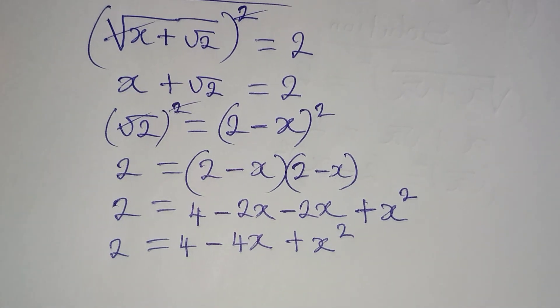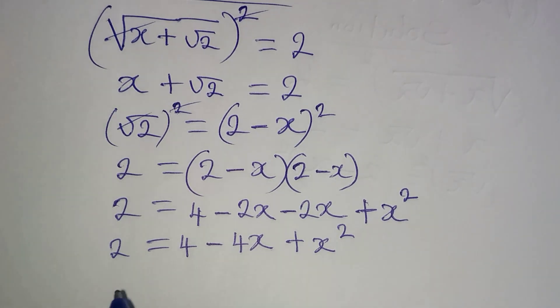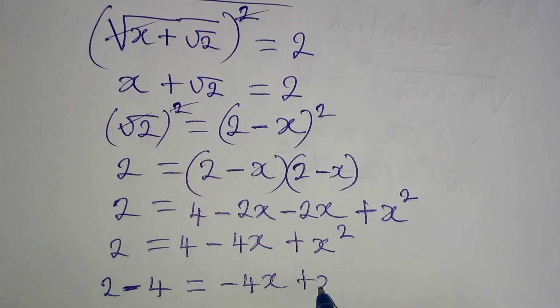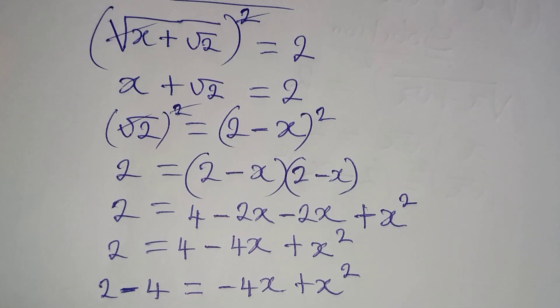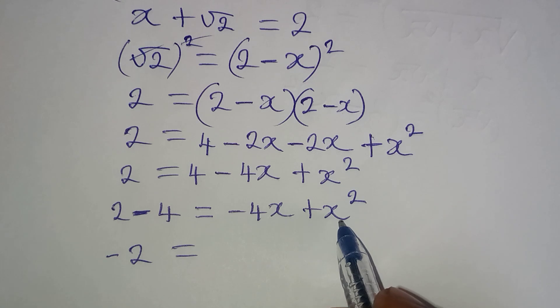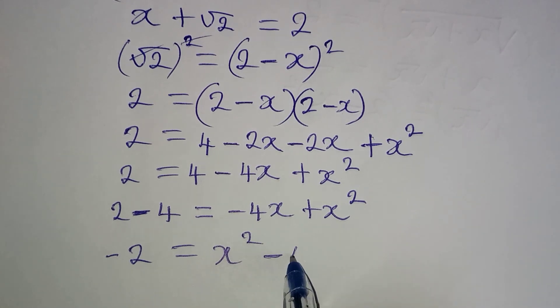Now what do I do from here? So I continue because I can collect like terms. So I'll have 2 minus 4 to be equal to minus 4x plus x squared. Minus 2 will be equal to... I want to write x squared first. Then minus 4x will appear.